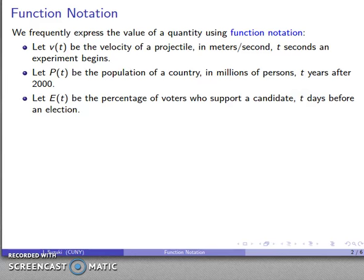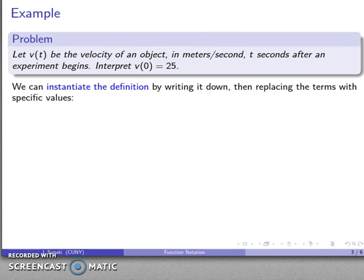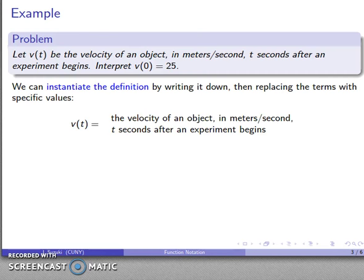And in every case, the function notation tells us something useful about the quantity. For example, let's let v be the velocity of an object in meters per second, t seconds after an experiment begins, and what is it telling us? Interpret v(0) = 25. So one very useful thing to do here is we can instantiate the definition by writing it down and then replacing the terms of the definition with some specific values. So our definition, v(t) is the velocity of the object in meters per second, t seconds after the experiment begins.